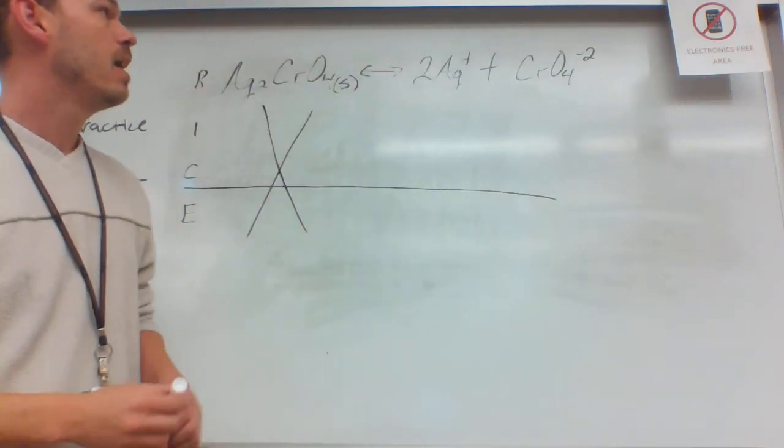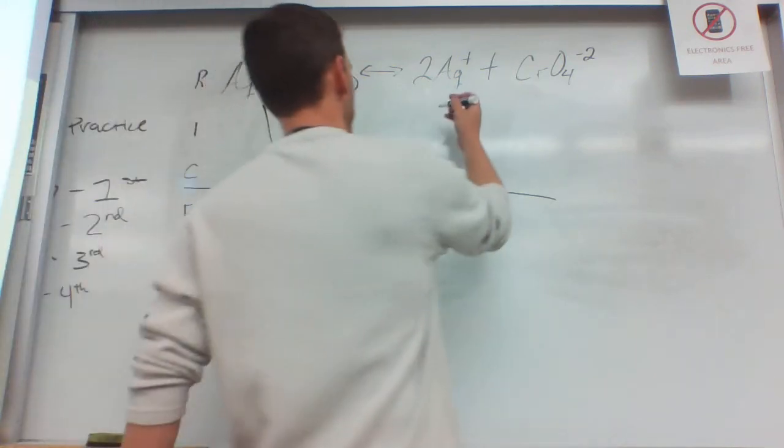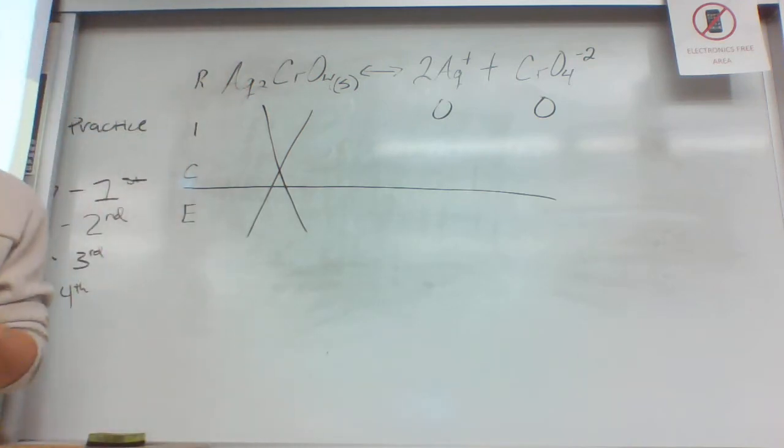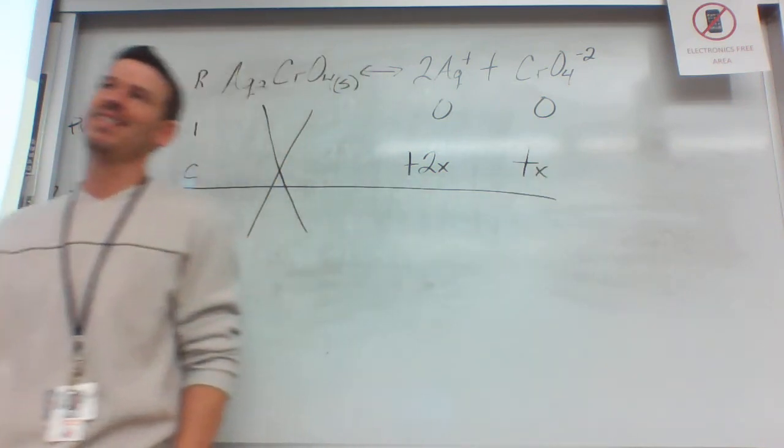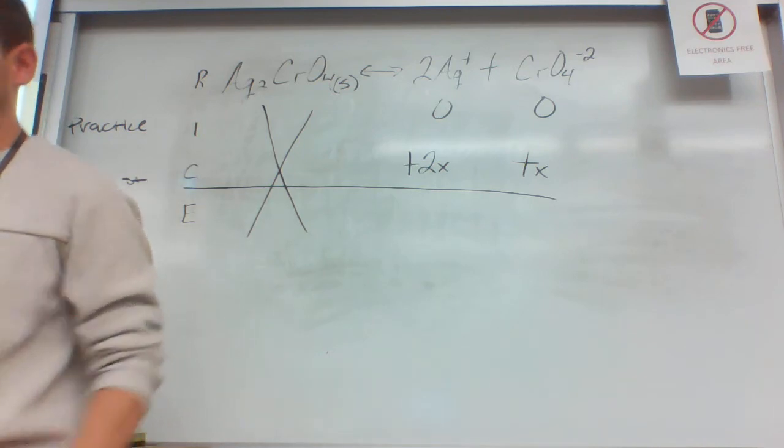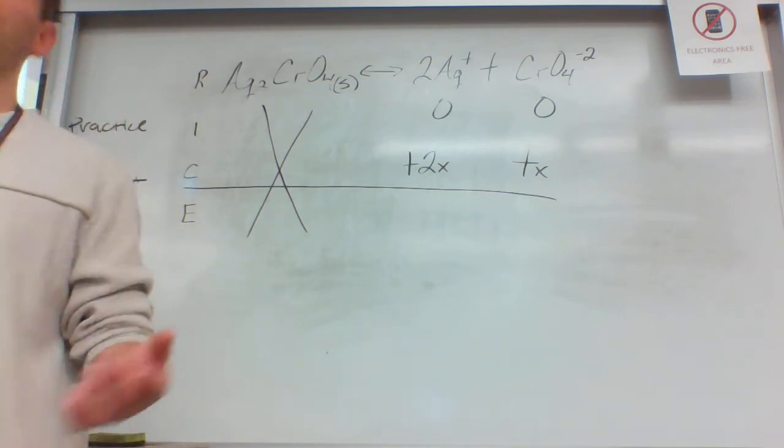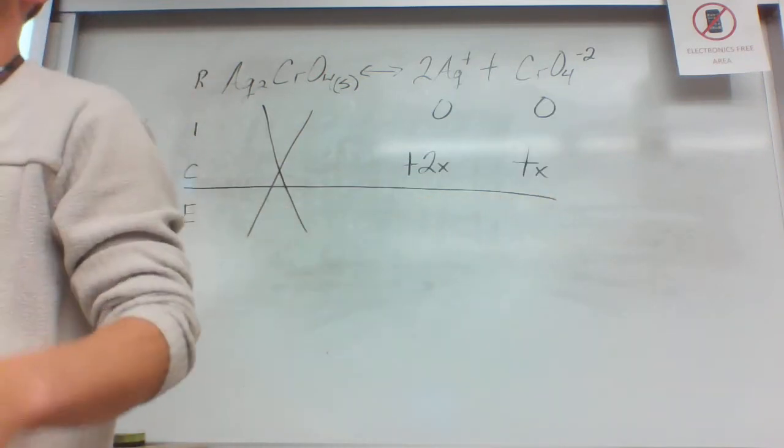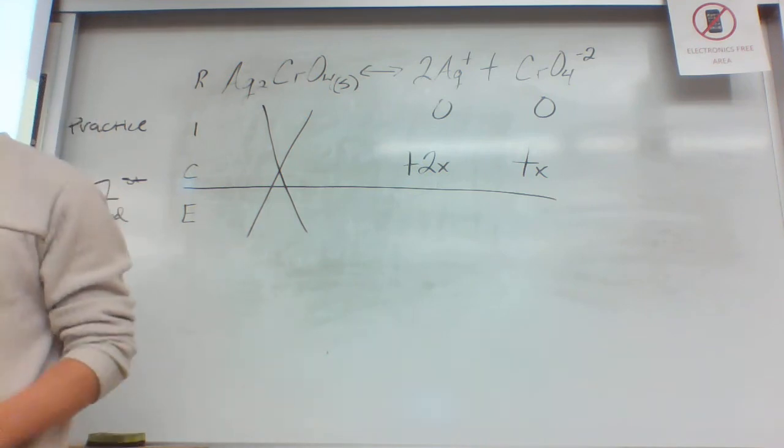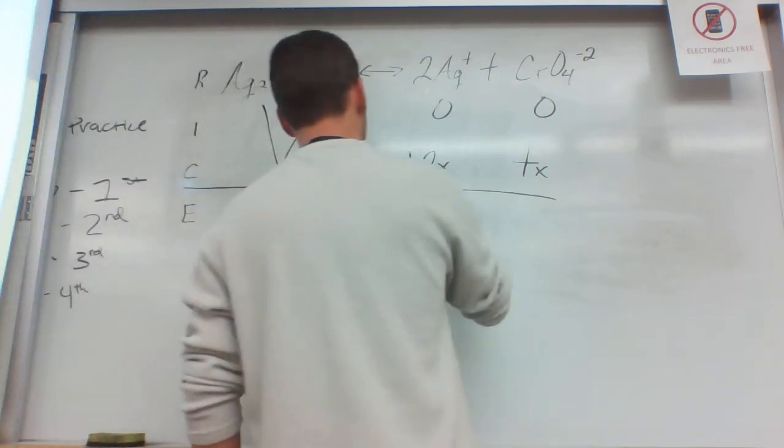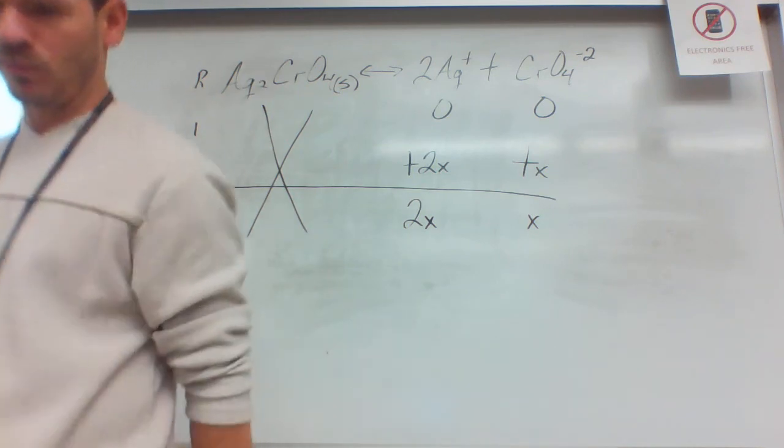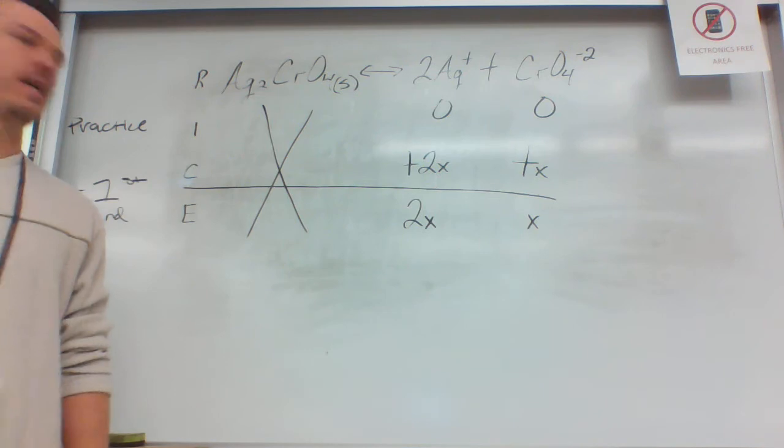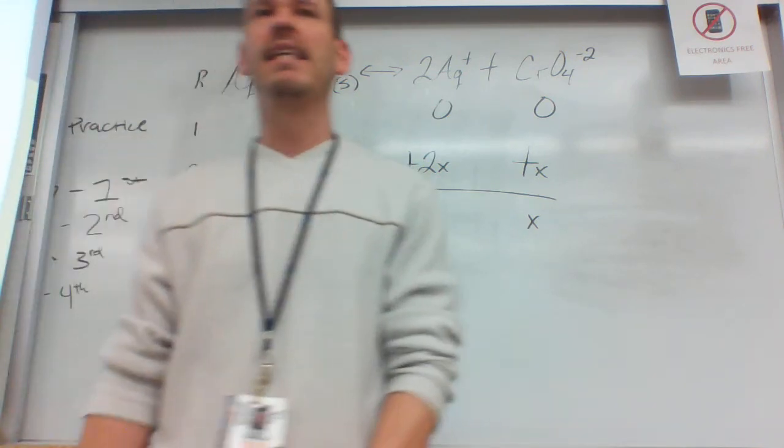So it's a rice table that we're going to be running here. What do we know about solids in a rice table? They can't be used. Since we know that we're always going to be starting with a solid, then we know that not only will this always be S, but we never have to do anything with it. We're only going to be dealing with the products. In this solution, we're ultimately starting with none of these, but as we show our shift, remember that the coefficient matters. My shift here is going to be plus 2x, while this is plus x.